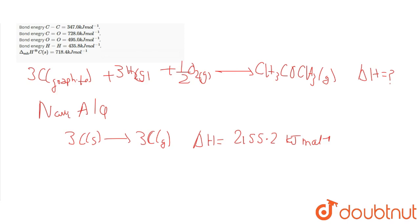We're given the bond energy of HH. That is 3 times H2. If we convert to 6 H gas, then delta H will be 3 times 435.8, which is 1307.4 kilojoules mole inverse.